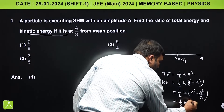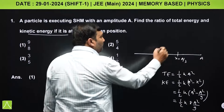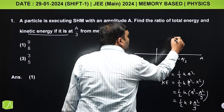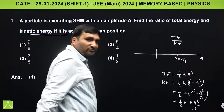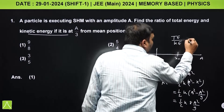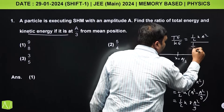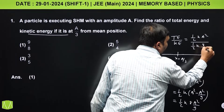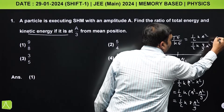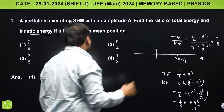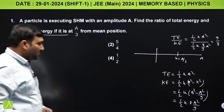The ratio of total energy to kinetic energy is: (½kA²) divided by (½k · 8a²/9), which gives 9/8. So the answer is 9/8. Very simple formula-based question.